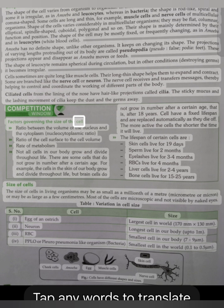Factors governing the size of the cell: Ratio between the volume of the nucleus and the cytoplasm (nucleo-cytoplasmic ratio), ratio of the cell surface to the cell volume, rate of metabolism. Not all cells in our body grow and divide throughout life. There are some cells that do not grow in number after a certain age. For example, the cells in the skin of our body grow and divide throughout life, but brain cells do not grow in number after a certain age, that is, after 18 years. The cells have a fixed lifespan and are replaced automatically as they die off. The more active the cells, the shorter the time it will live.